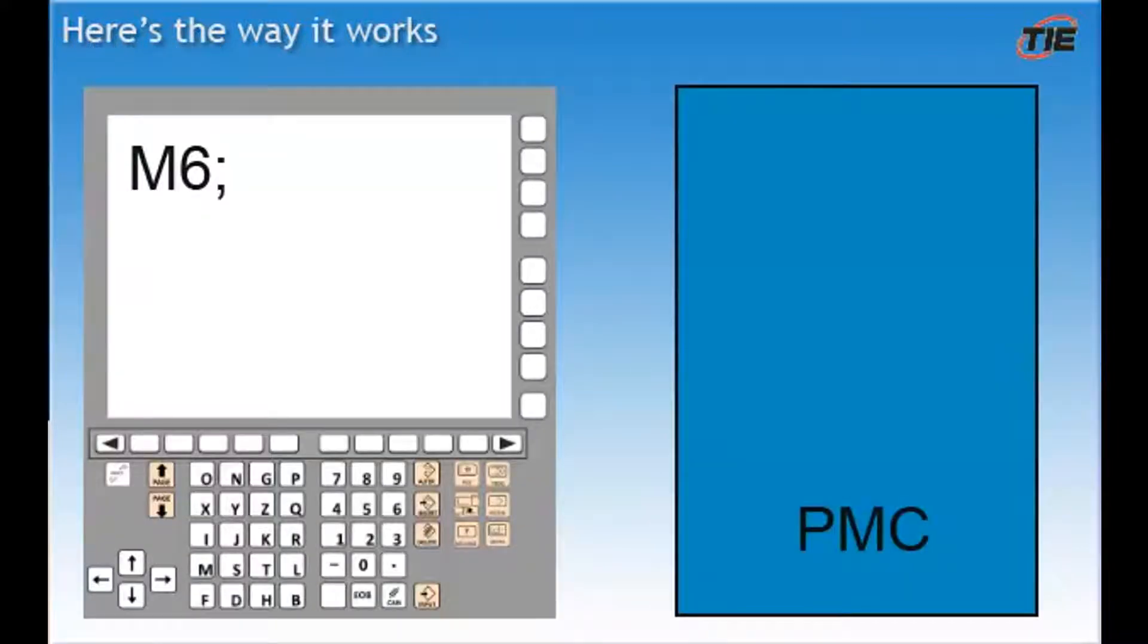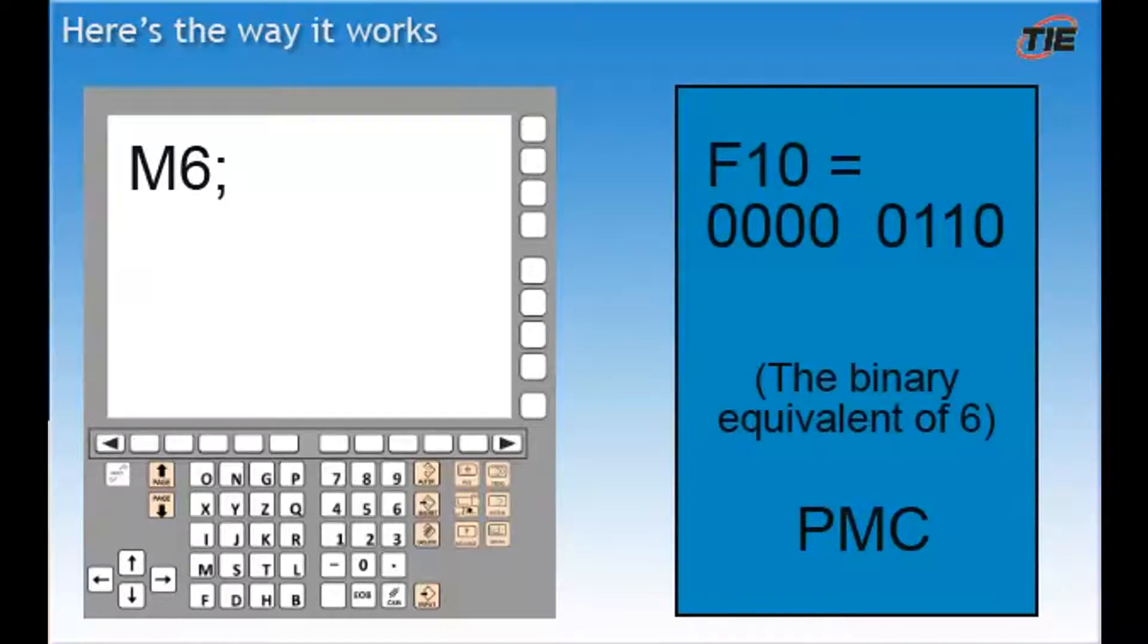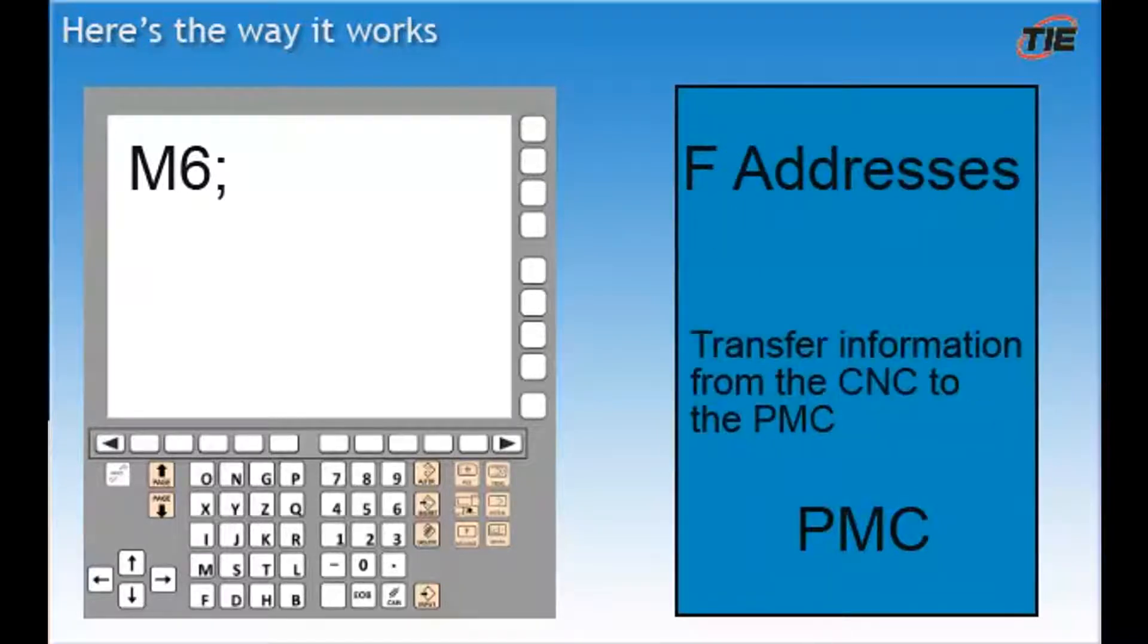Take, for example, M6. When an M6 is read in the part program, it's sent from the CNC over to the PMC. This number is written to address F10 and sent to the PMC. As you may recall, the F addresses transfer information from the CNC to the PMC. We will get back to the F10 address in just a moment.